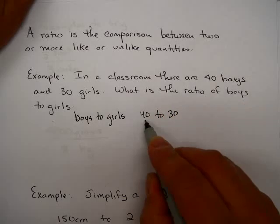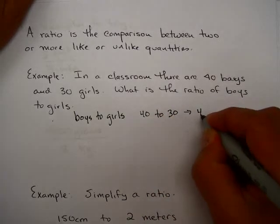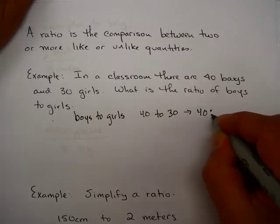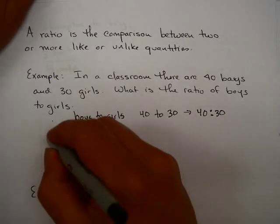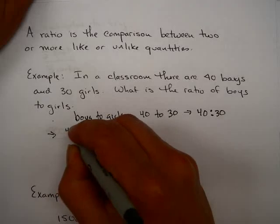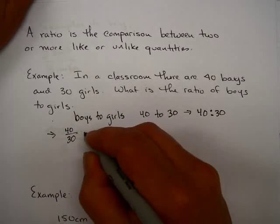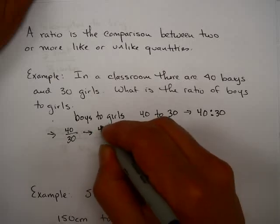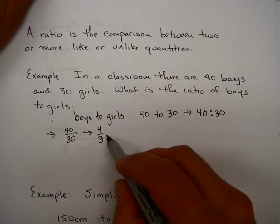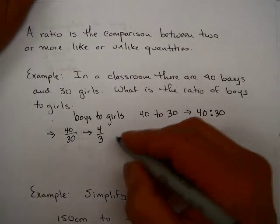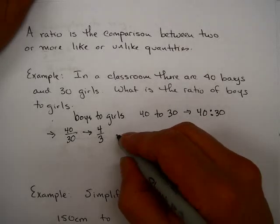We could write this down as 40 to 30. Sometimes this is written down as 40 colon 30, and equivalently, that's written down as 40 over 30. You can reduce this fraction to 4 thirds.